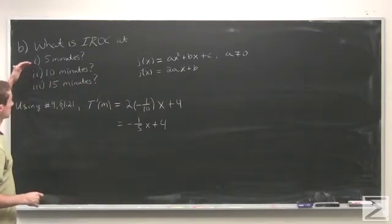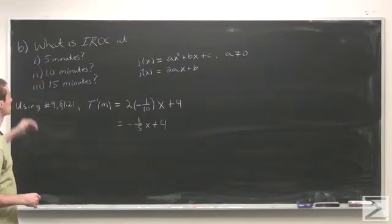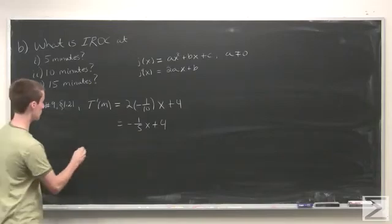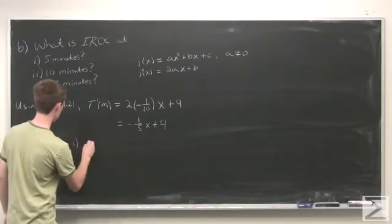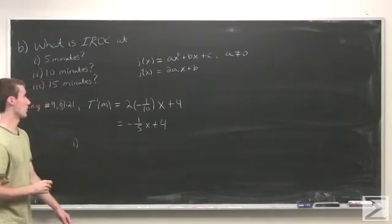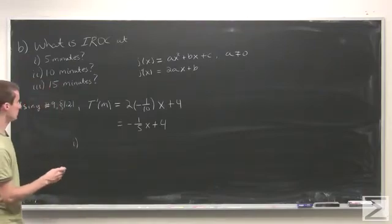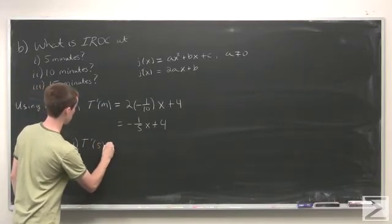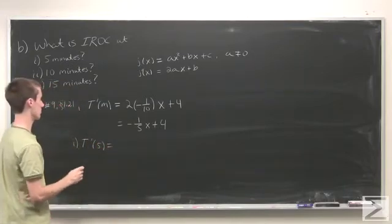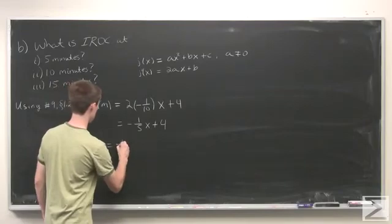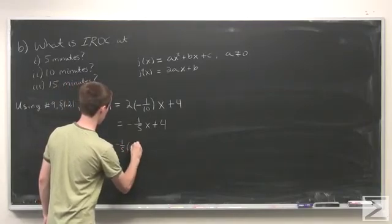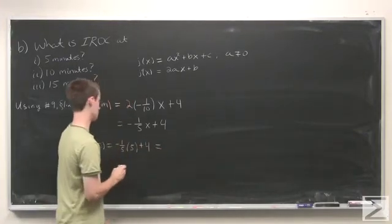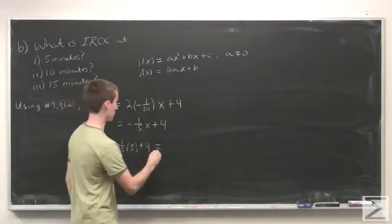Now we can substitute each value. For part i, T'(5) equals -1/5 times 5 plus 4, which is -1 + 4, or 3.